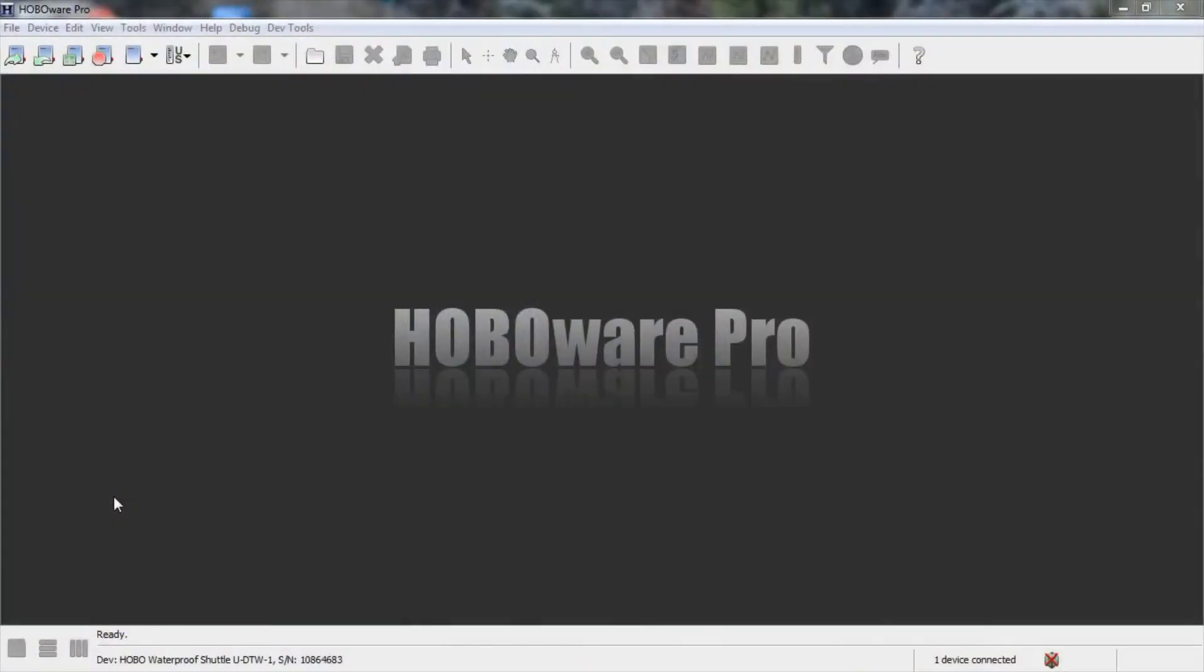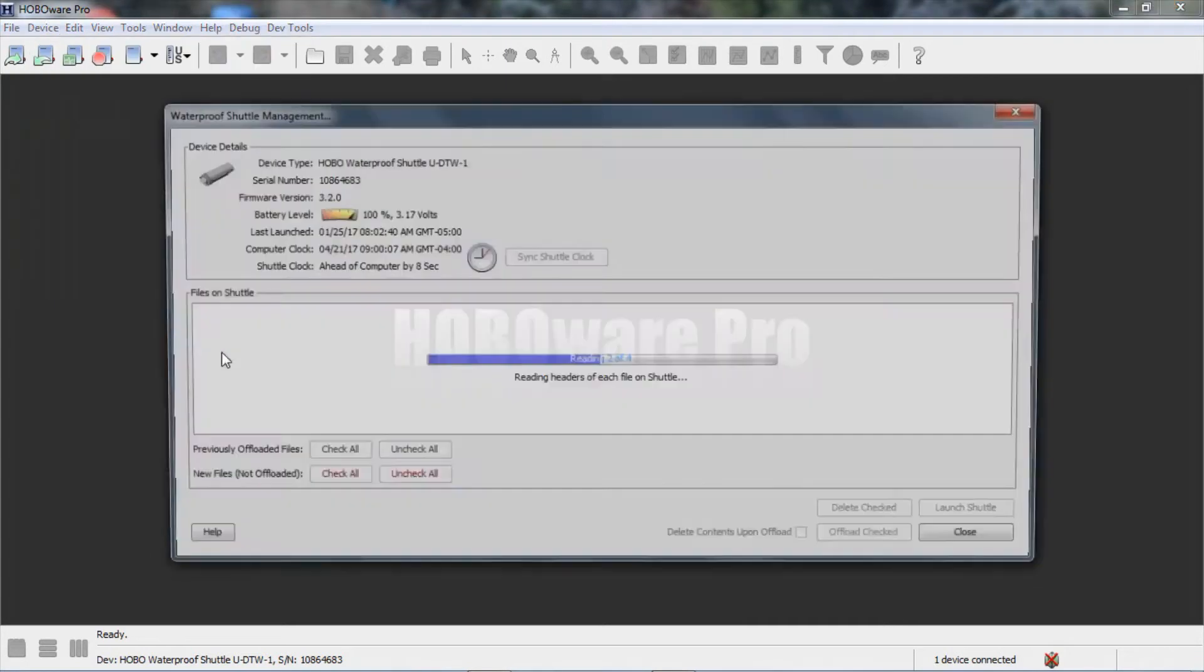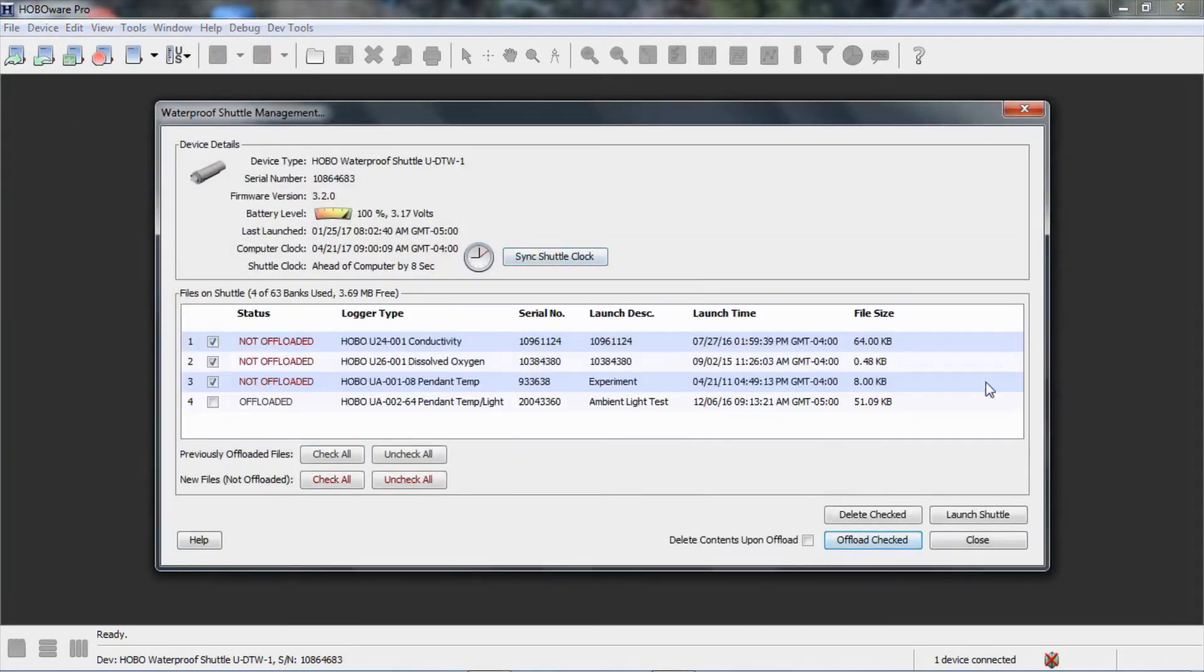Now that we have our batteries replaced in our shuttle, we've got it connected to our USB port on our computer. We have HoboWare Pro open. We see the waterproof shuttle is connected, and we want to say device, manage shuttle. Now you notice we have some data files on here. These say they have not been offloaded, so you'd want to offload these first prior to launching your shuttle.